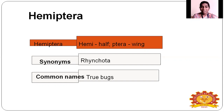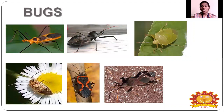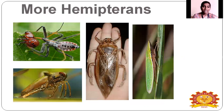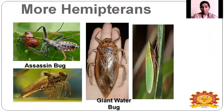The common name of Hemiptera is 'true bug.' The etymology 'half wing' means their wings are differentiated — the first half of the wings will be either leathery or hard, and the remaining part of the wing will be membranous. That's why it is called half wing. Some common bugs include the red cotton bug, fainted bug, plant bug, assassin bug, giant water bug, leafhopper, and water boatman.